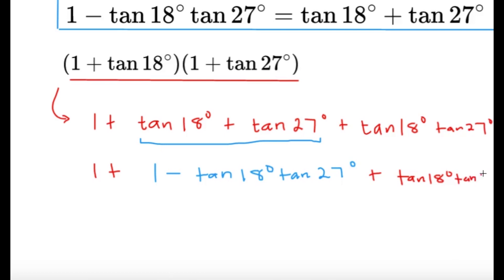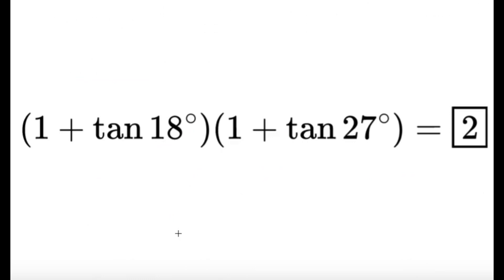So, since we have this, we can see some nice cancellations here. So, the minus tangent 18 degrees tangent 27 degrees is going to cancel nicely. So, apparently this question is just a very simple 1 plus 1. And there we go.